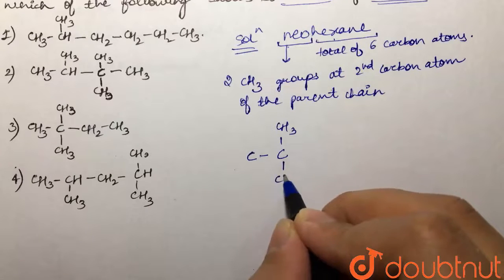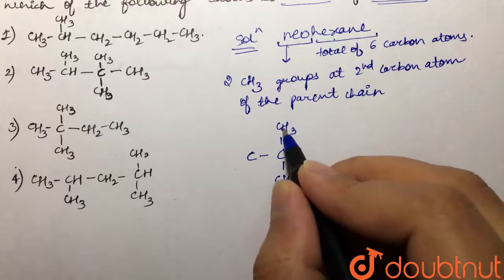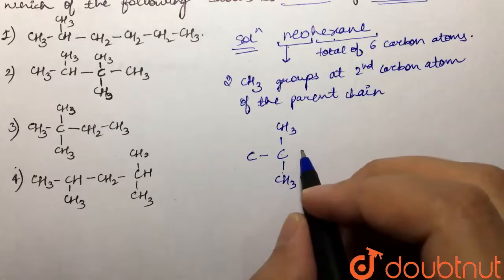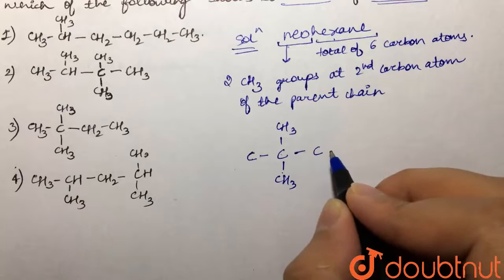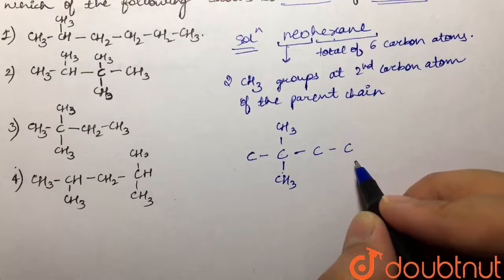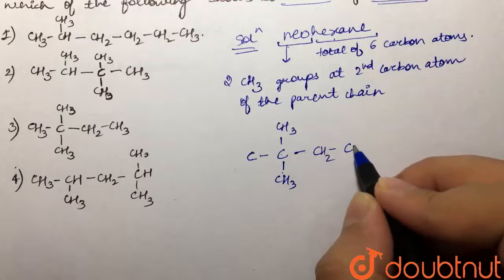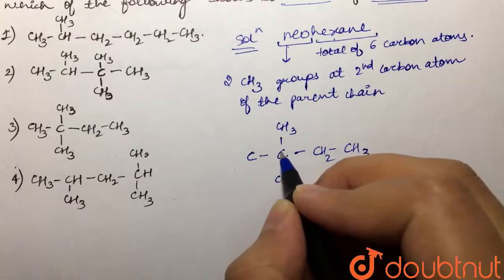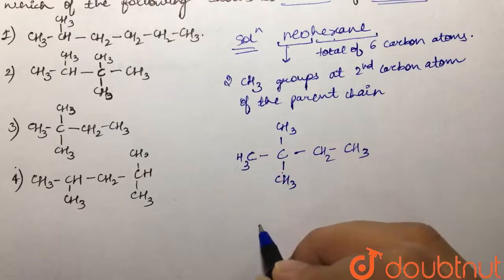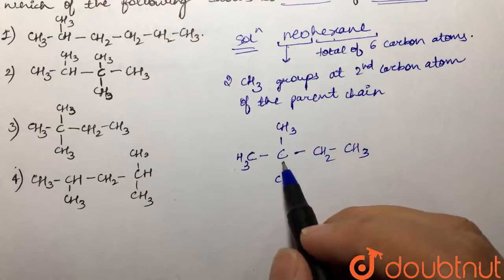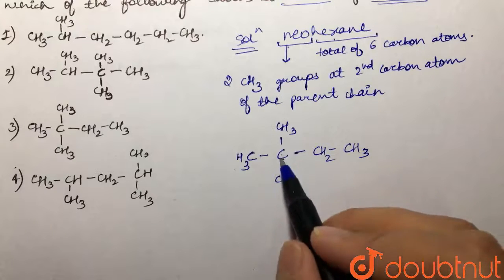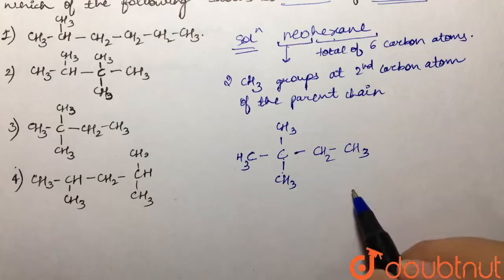Now one, two, three, four carbons are already here, so we would have two more carbon atoms. So this would be CH2, this would be CH3. This over here would be CH3. So this becomes our neohexane. We have one, two, three, four, five, and six carbon atoms.